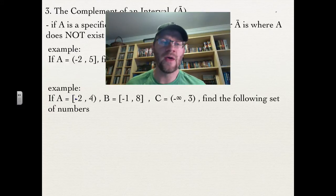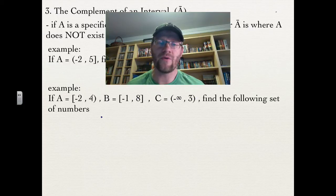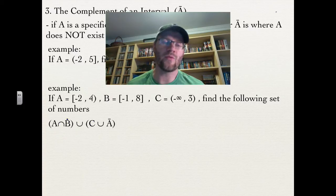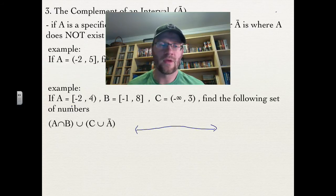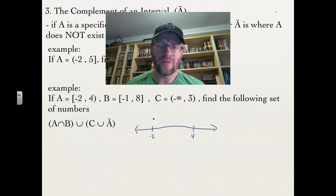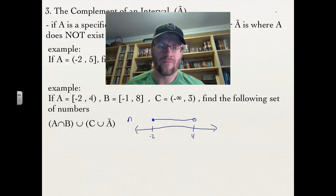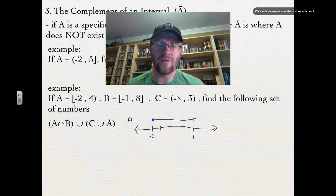Here's a second example. If A is from negative 2 to 4, B is from negative 1 to 8, and C is from negative infinity to 3, find the following sets. Using a number line: A goes from negative 2 closed to 4 open, and B goes from negative 1 to 8 both included. For A intersection B — the elements in common — the answer is negative 1 to 4, with 4 not included.